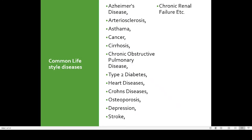Here we have a list of different types of lifestyle diseases we will take one by one: Alzheimer's disease, atherosclerosis, asthma, cancer, cirrhosis as a lung disease, chronic obstructive pulmonary disease, diabetes, Crohn's disease — a type of disease affecting the stomach — osteoporosis affecting our bones, mental depression, stroke — which is basically the rupture of blood vessels in the brain — and chronic renal failure.